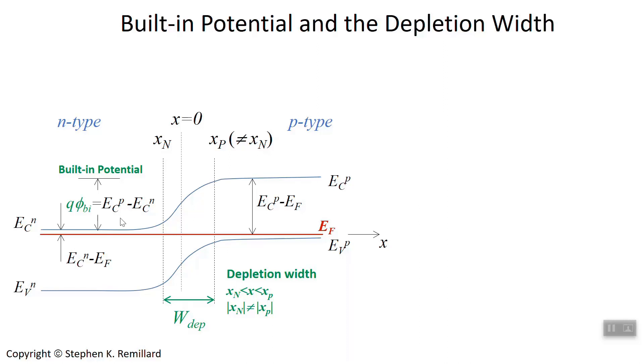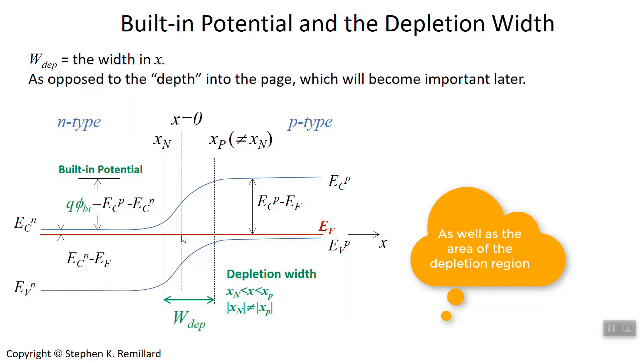Let's begin with built-in potential, which, since it's associated with the location of the conduction band edge, we should be able to use equation 1.8.5 to calculate it. I do want to point this out too: the width of the depletion region is a distance as you cross the junction. So the junction interface is right here at x equals zero. Another quantity which will become important later is the depth of the depletion region, that is going into the page.